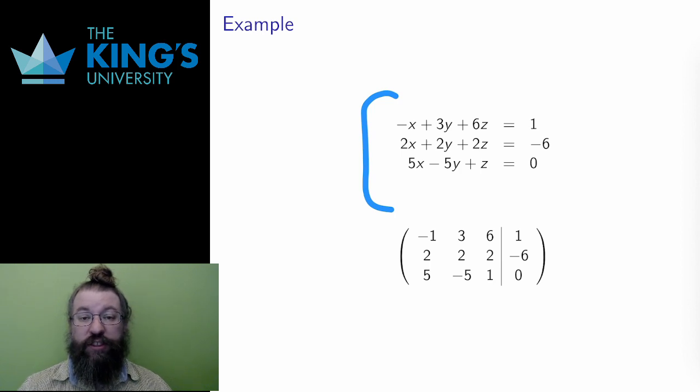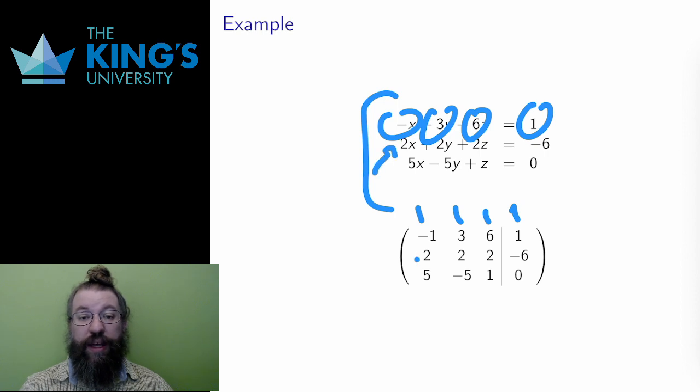Then I transfer the numbers row by row. The first row has the constants -1, 3, 6, and 1 after the equal sign. I write them in the matrix. The second equation has the constants 2, 2, 2, and -6.